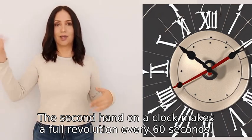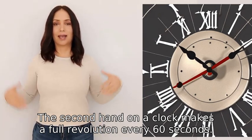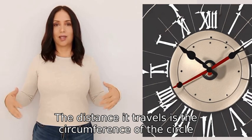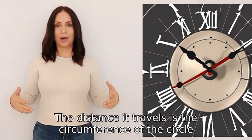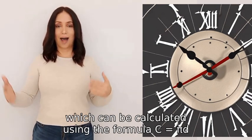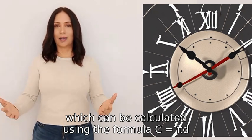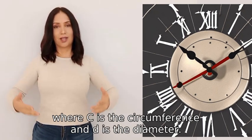The second hand on a clock makes a full revolution every 60 seconds. The distance it travels is the circumference of the circle, which can be calculated using the formula C = πd, where C is the circumference and d is the diameter.